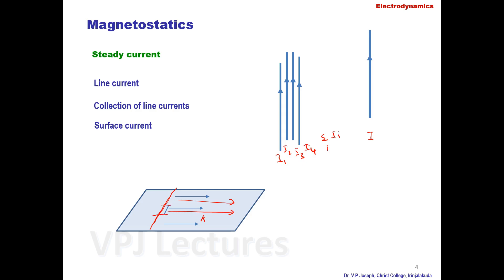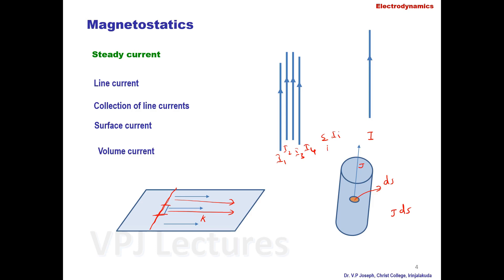For surface current, taking a unit length of the surface, the current crossing is the current density K in amperes per meter. The other type is the volume current density, represented by the vector J. For any element dS, the current flow through it is J dS; if dS is one unit, that is the current density J — current crossing per unit cross-section. The total current is I equals the surface integral of J dot dS, and surface current can be represented as the line integral of K dot dl equals total current I.